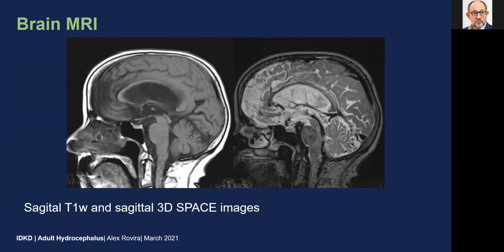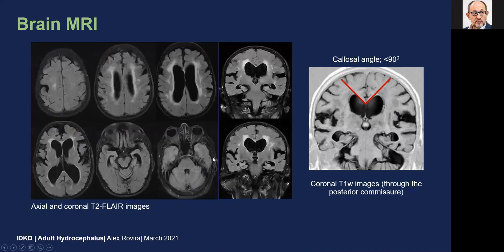The sagittal sequences, particularly the 3D SPACE sequence, show normal CSF flow across the aqueduct, indicating normal communication between the supratentorial ventricular system and the fourth ventricle. On axial images we can identify enlargement of the ventricular system with an Evans index of 0.4, associated with enlarged sylvian fissures but with narrowing of the sulci over the high convexity. A decreased callosal angle less than 90 degrees on the coronal T1-weighted image and extensive white matter abnormalities on T2-weighted images are additional and relevant imaging findings.